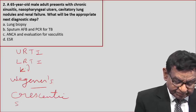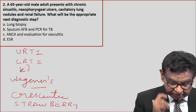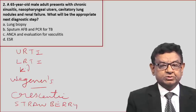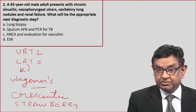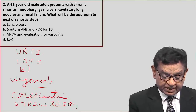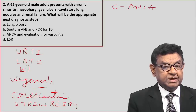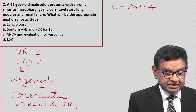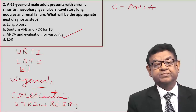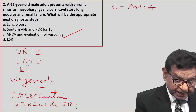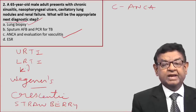An extra feature — a question on this came last year also — is that in Wegener's granulomatosis you typically get strawberry gingiva. For a patient, the best initial test is C-ANCA antibodies, but the most confirmative test is biopsy — lung biopsy. That is why the answer of this question is C. If the question asked which is the most accurate test, the answer should have been lung biopsy.